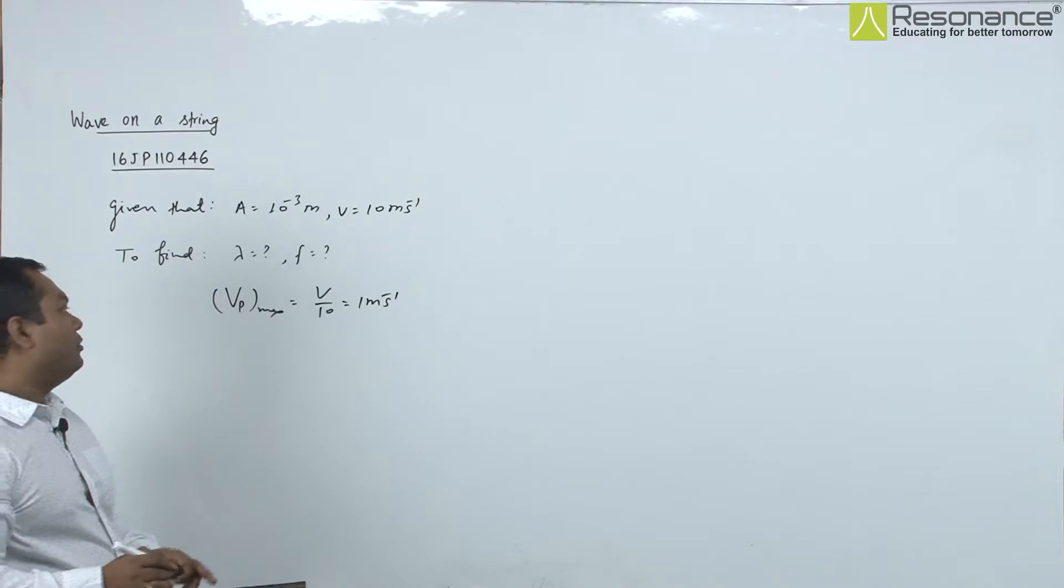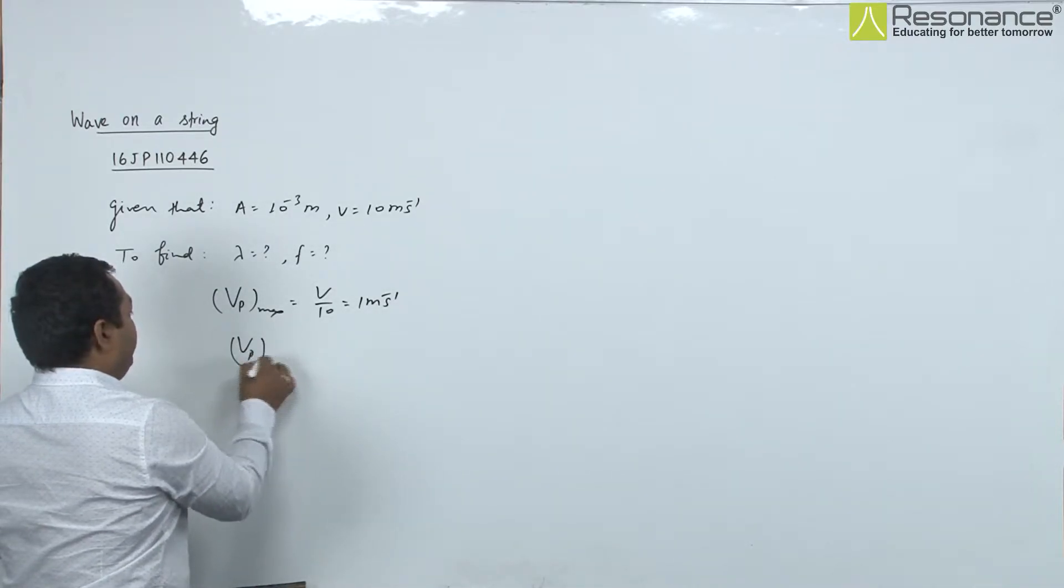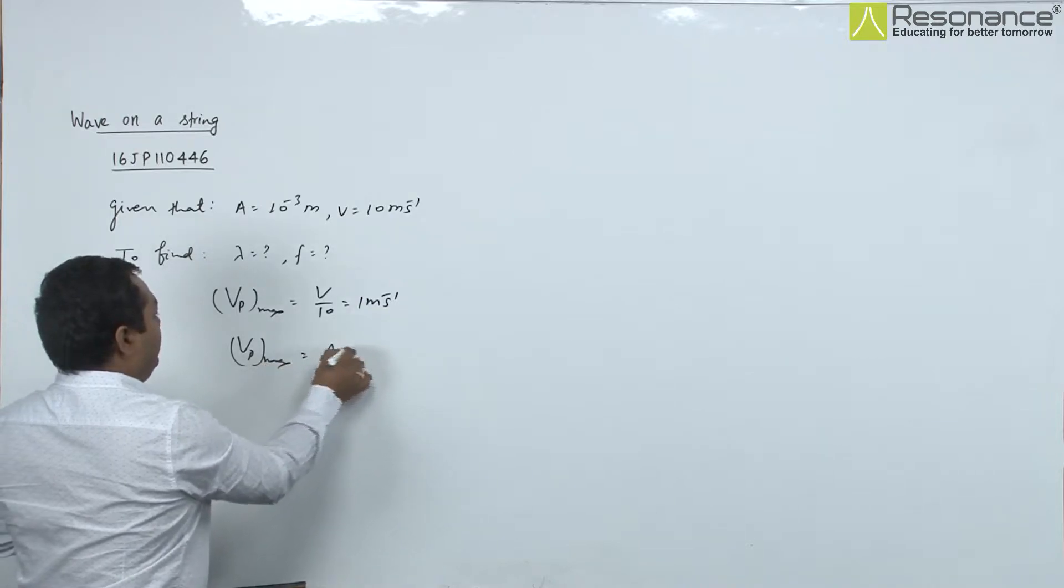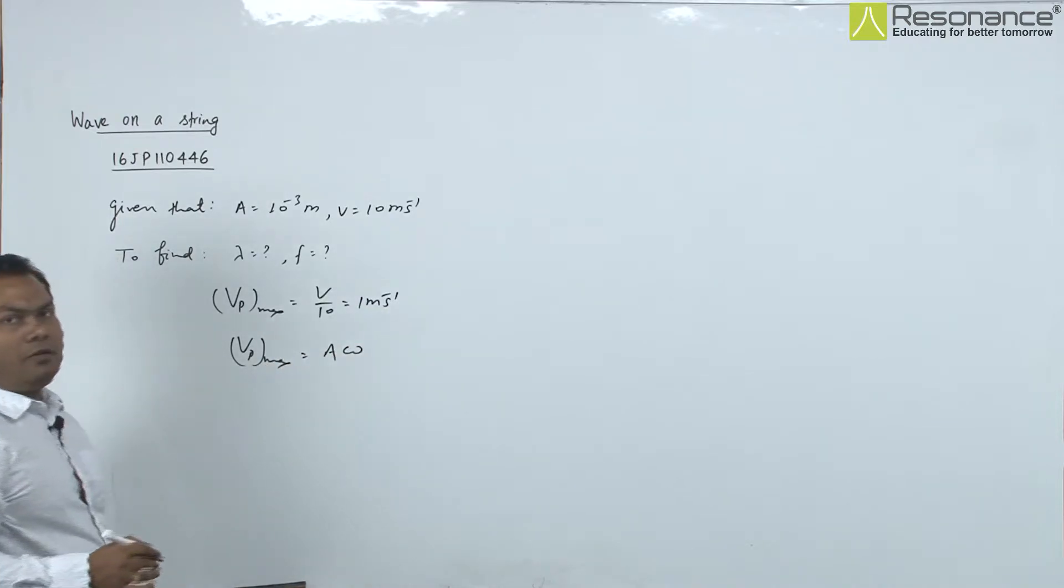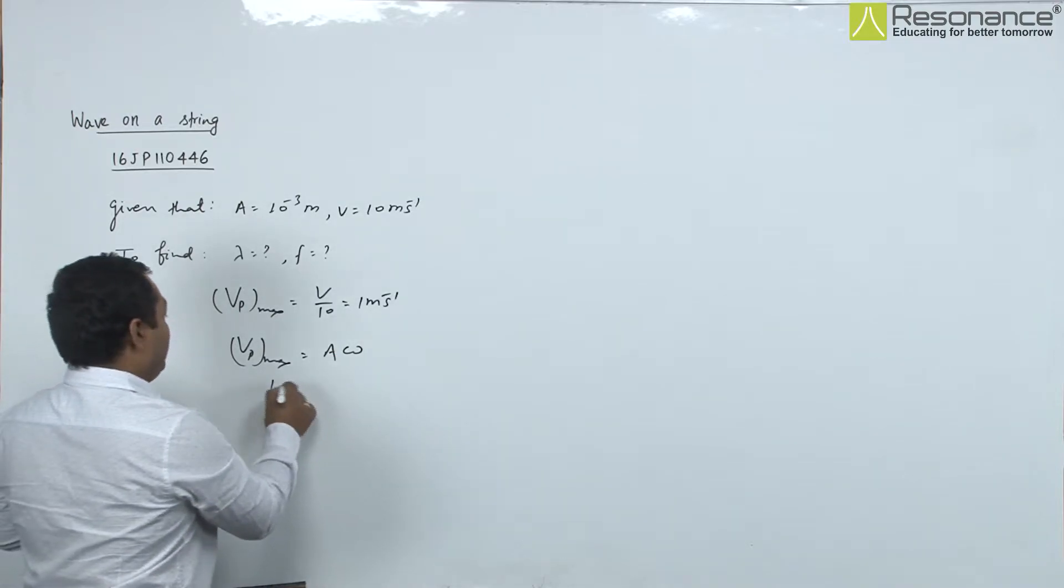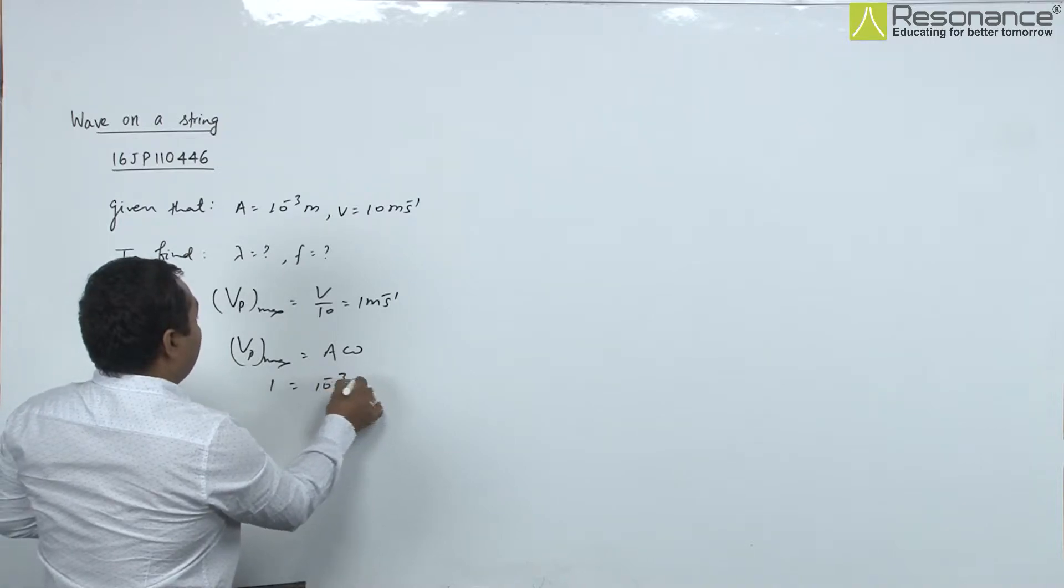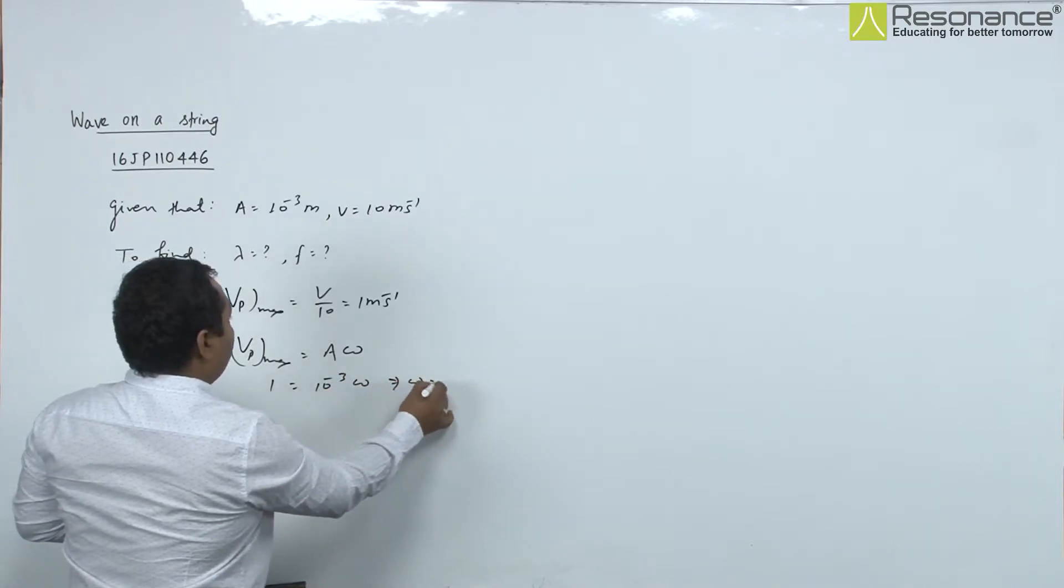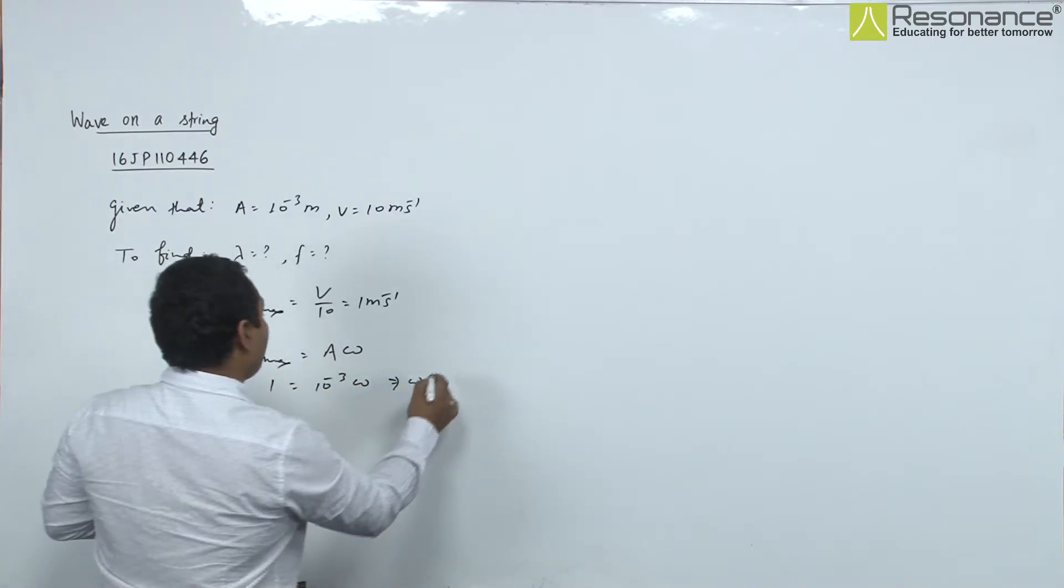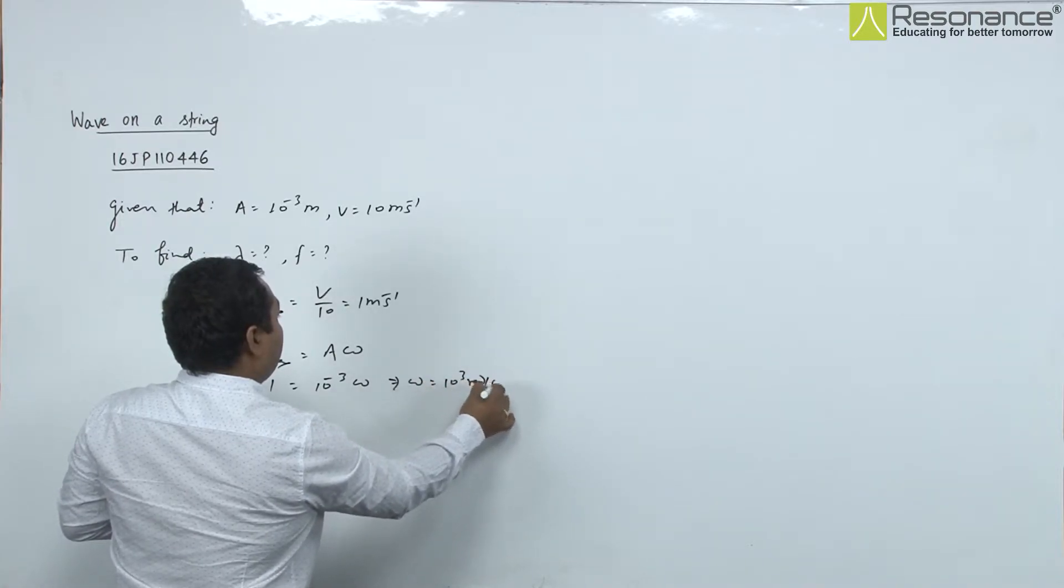We know the maximum value of particle velocity Vp_max as A times omega, which we calculated as 1 meter per second. So 1 equals amplitude times omega, which is 10^-3 times omega. This implies omega equals 10^3 radians per second.